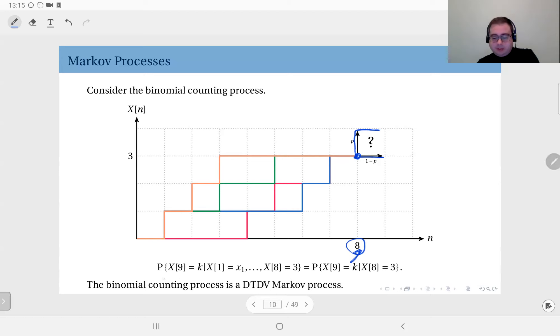Mathematically speaking, the probability that X(9) equals k given that X(1) is something, X(2) is something, etc. up to X(7) is something, X(8) is three. This conditional probability is exactly equal to probability that X(9) equals k given X(8) is three. So that information by itself is sufficient.